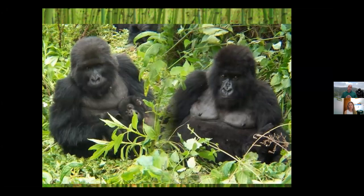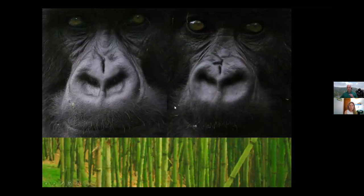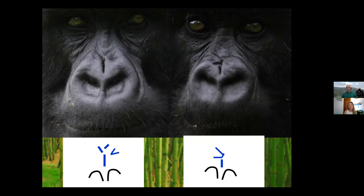One important thing for people working with gorillas is being able to tell them apart. If you look closely at gorilla faces, you can see different wrinkle patterns above their nostrils — what we call a 'nose print.' It's kind of like a fingerprint. As a veterinarian I had to carry a cheat sheet to identify which gorilla was which, especially for females and younger animals.